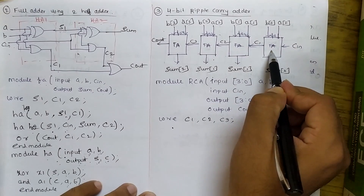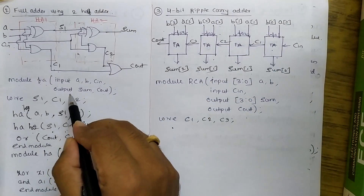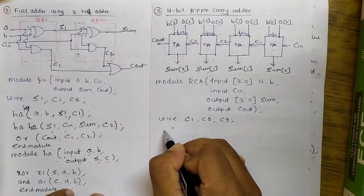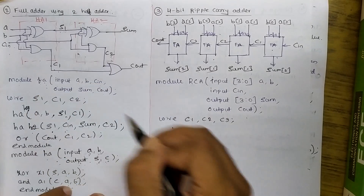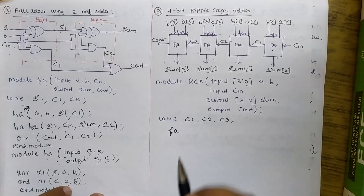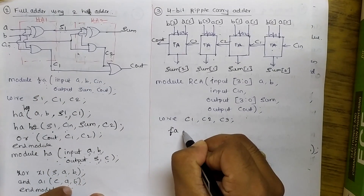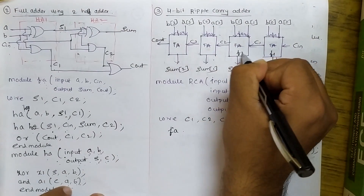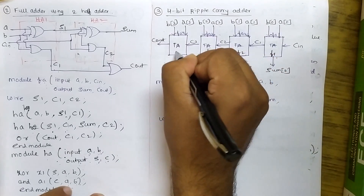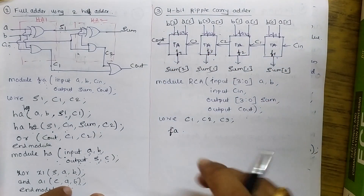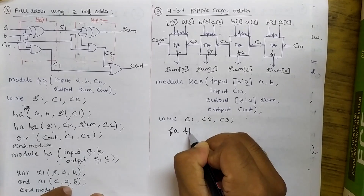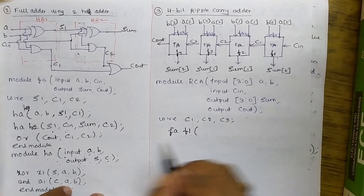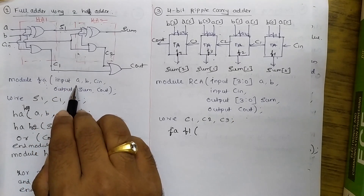When writing the code, follow ordered instantiation by referring to the full adder code. FA is the full adder module name. I write FA followed by instance labels F1, F2, F3, F4 — you can choose any names based on your preference.